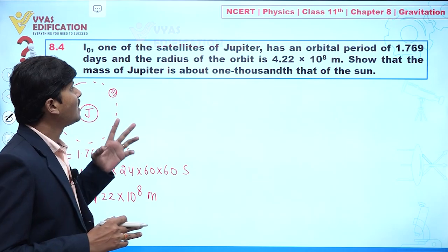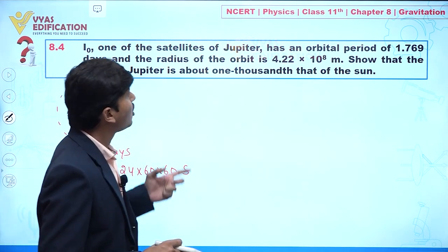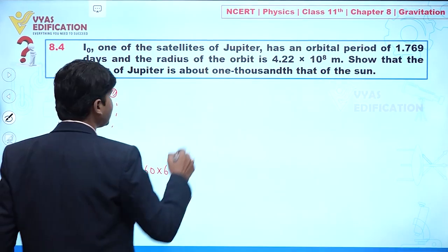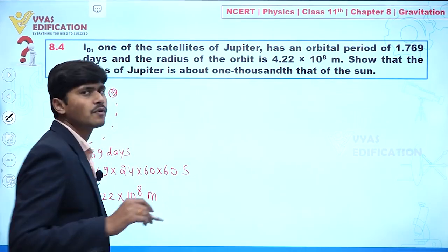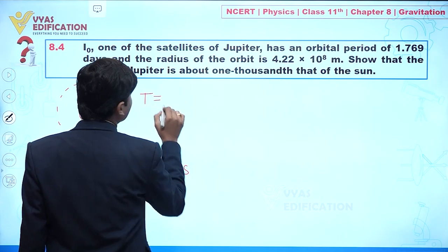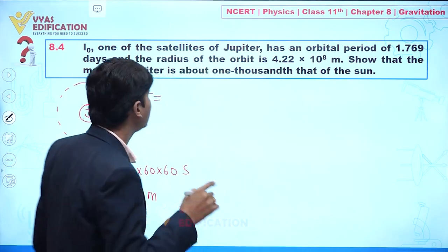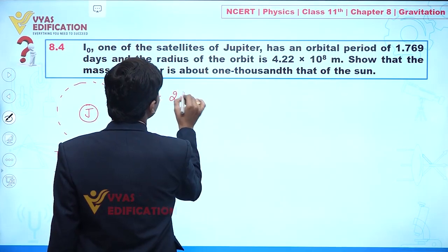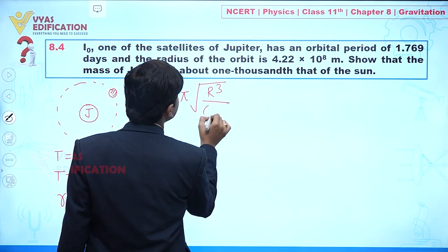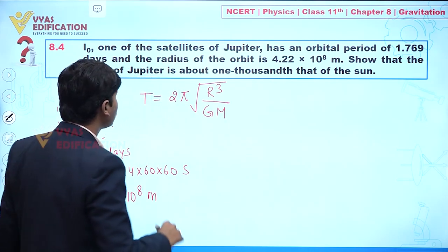We can write one formula: the time period of a satellite is given by T = 2π√(r³/GM). Whenever we are talking about the time period of a satellite of Jupiter, we take into consideration the mass of Jupiter.